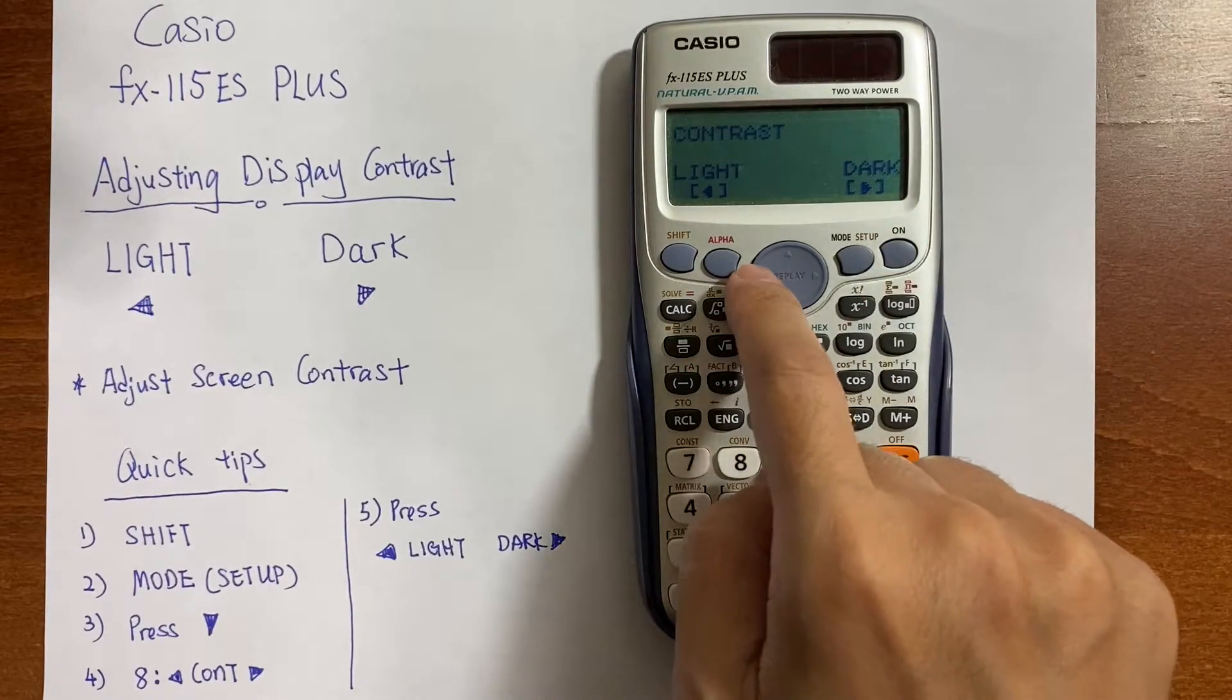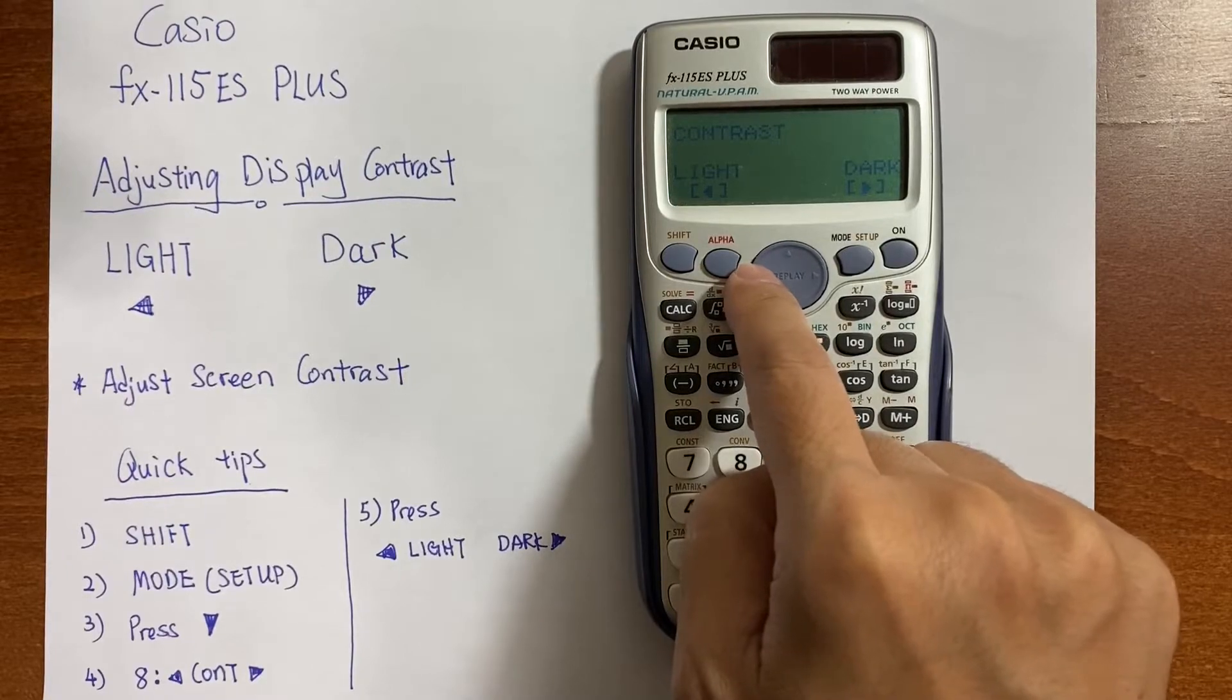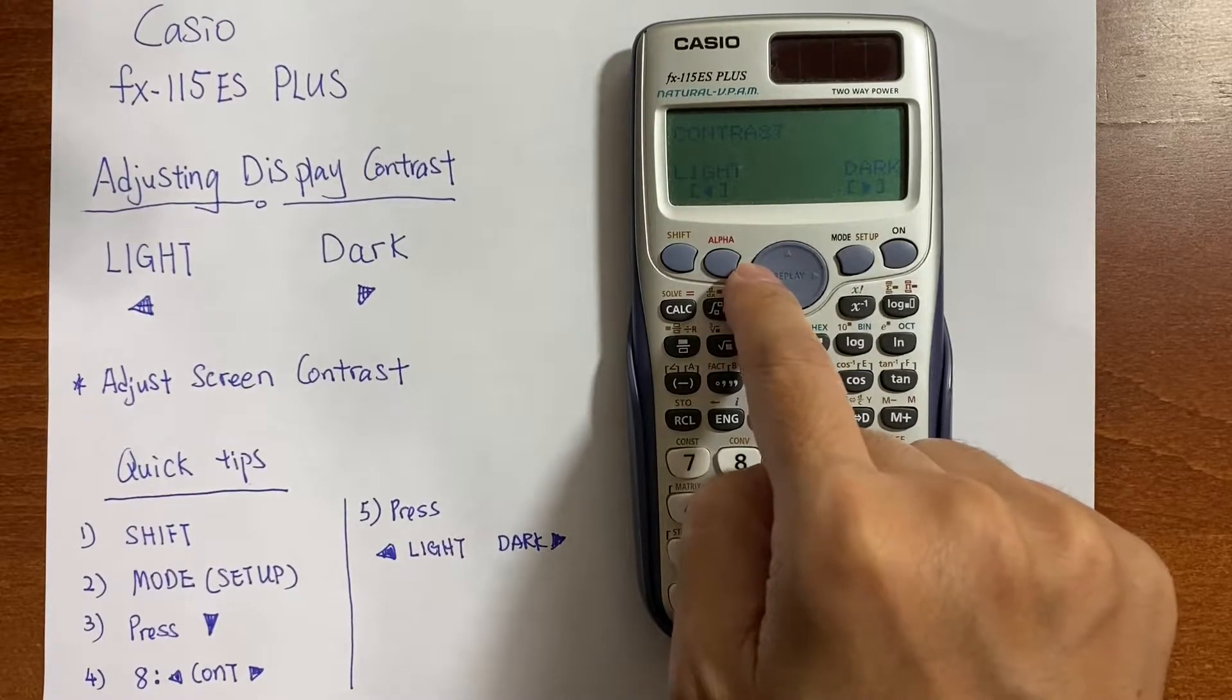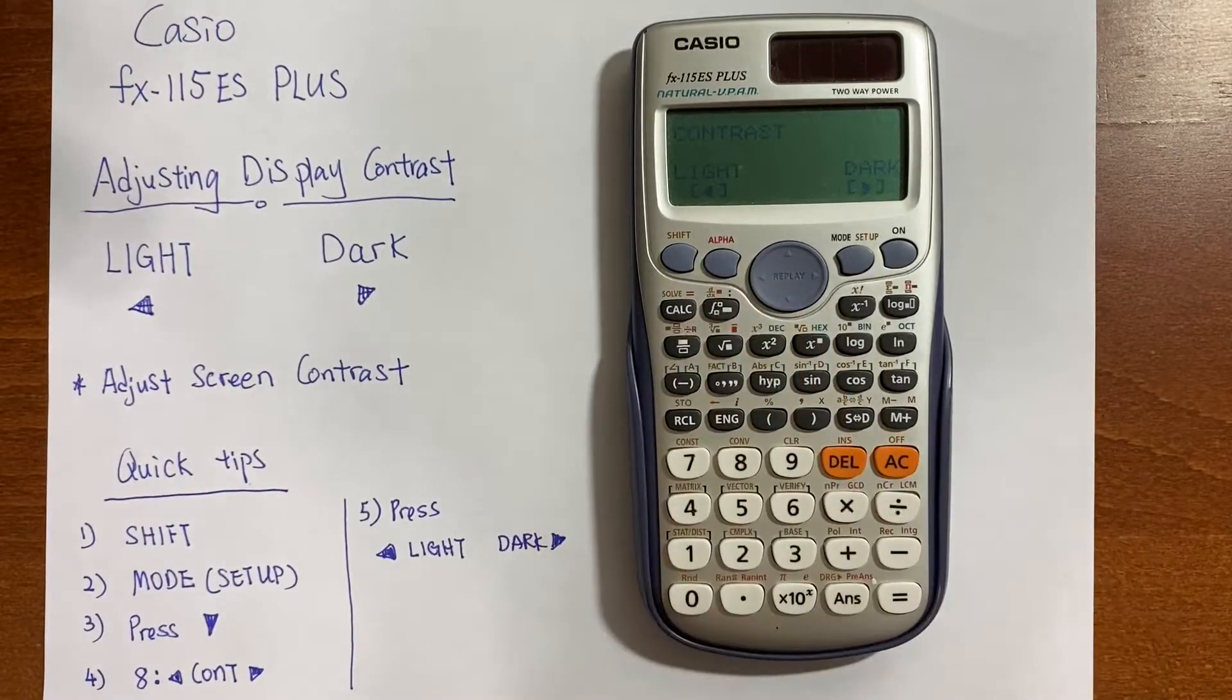So let's try to get a lighter display. As you can see, as I'm pressing the left button, the display starts to fade out.